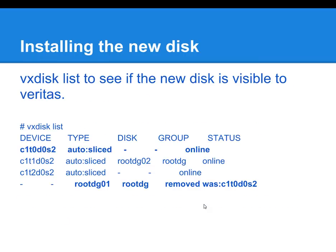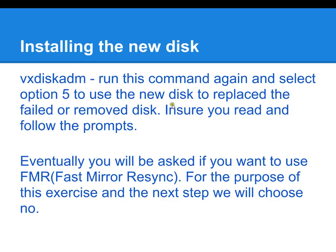Installing a new disk: VXDisk list is the command you always want to run, just to see where you're at and make sure that you're on the same page. After running all those commands, we now see that C1T0D0 is online. It's online, but it isn't in the rootDG disk group. We go and run VXDiskADM again, select option five, and use this option to put the new disk back into the group and mirror it.